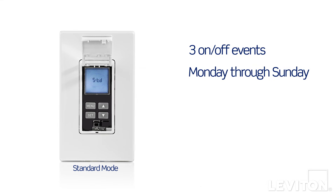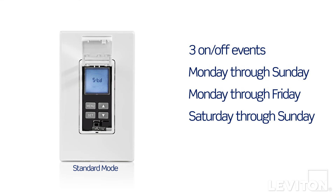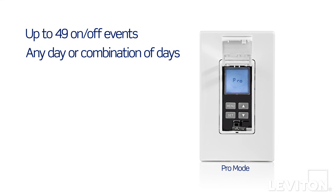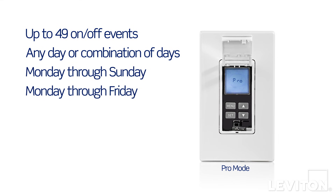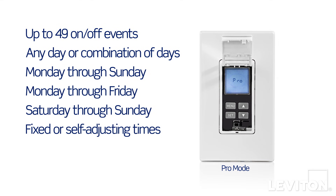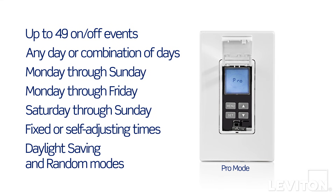STD mode provides up to three on-off events for Monday through Sunday, Monday through Friday, or Saturday through Sunday at fixed times. For sunup, sundown, and daylight saving time events, please reference the Pro mode instructions. Pro mode provides up to 49 on-off events for any day or combination of days — Monday through Sunday, Monday through Friday, or Saturday through Sunday — at desired fixed or self-adjusting times such as sunup and sundown. Daylight saving time and random modes can also be set.